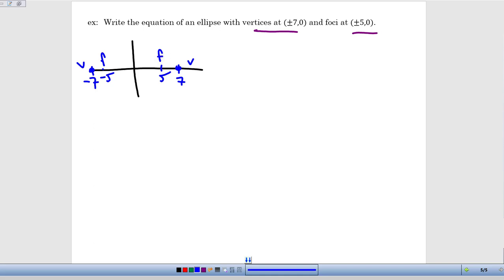First of all we can see that our ellipse is stretched in the horizontal direction because the vertices are the farthest distance that our ellipse extends. So I know my equation is going to be x minus h squared over a squared, since the ellipse is stretched horizontally, the bigger denominator is going to be underneath the x, plus y minus k squared over b squared equals 1. So I know that's the equation that I'm trying to fill in.